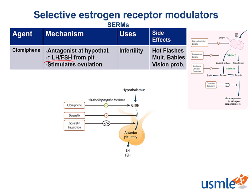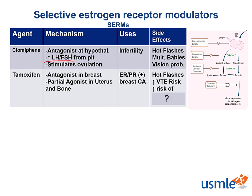Another SERM that is highly board-testable is tamoxifen. It competitively binds to the estrogen receptors as an antagonist in breast tissue, as well as a partial agonist in uterine and bone tissue. It is used to treat and prevent recurrent estrogen receptor or progesterone receptor positive breast cancer in pre- and post-menopausal women.